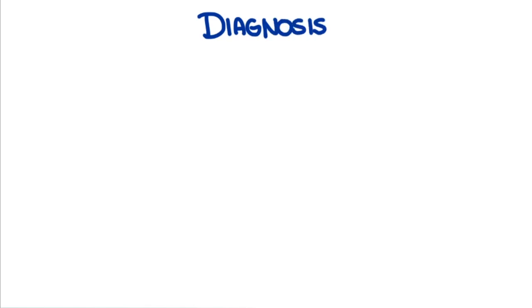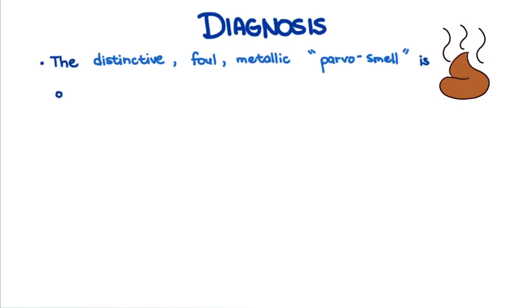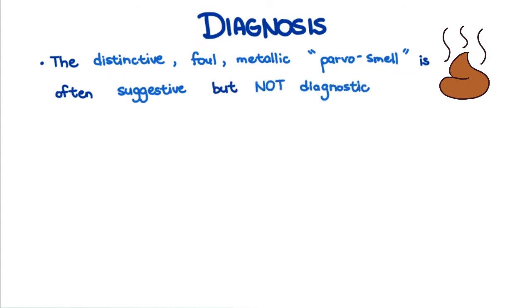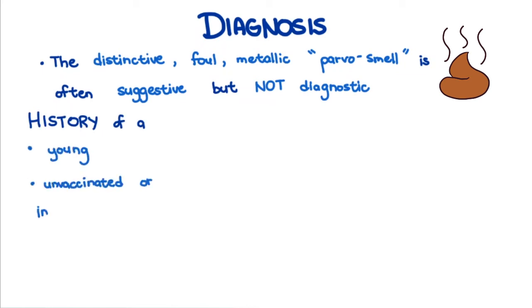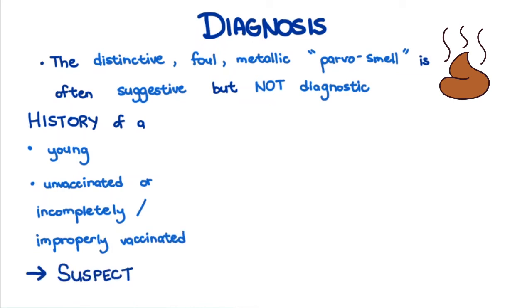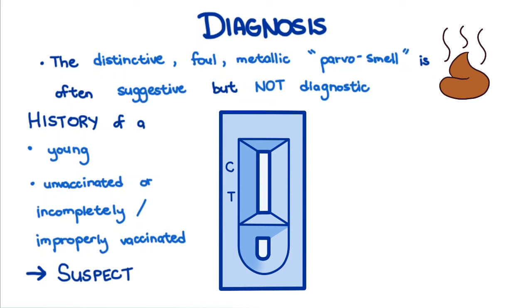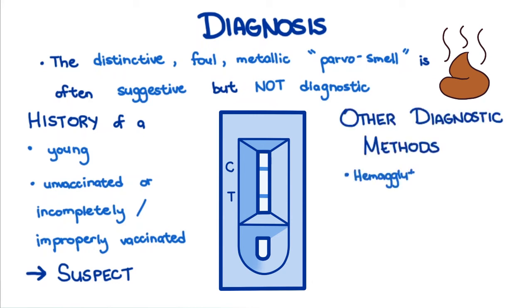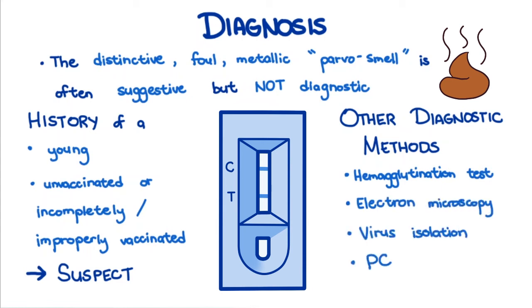The distinctive foul metallic parvo smell in puppies is often suggestive, but not in and of itself diagnostic. History of a young, unvaccinated, or incompletely or improperly vaccinated dog is suspect. Immunoassay kits that detect canine parvovirus antigen in feces are widely available and commonly used in veterinary clinics. Other diagnostic methods include hemagglutination tests, electron microscopy, virus isolation, and polymerase chain reaction.